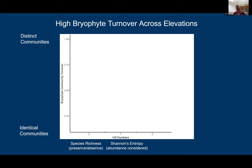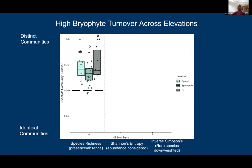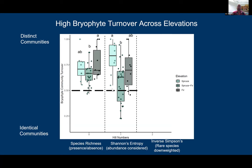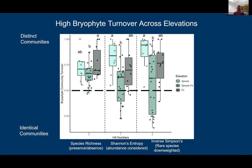Across all elevation zones at q=0 we see high rates of bryophyte community turnover. Going to q=1 with Shannon's entropy, again high rates of community turnover. The same is seen at q=2 with the inverse of Simpson's where rare species are down-weighted. The letters indicate significance between groups within a hill number, but the main take-home message is that there is high bryophyte turnover across all elevations regardless of how we weight species in terms of abundance or rarity.